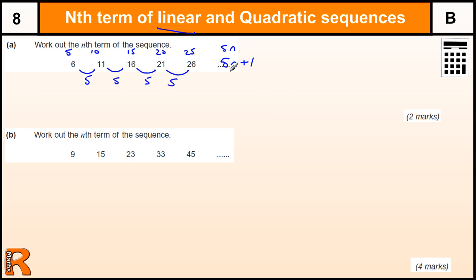The most common wrong mistake is people just put n plus 5, because that's the term to term rule, but not the position to term rule, or the nth term.